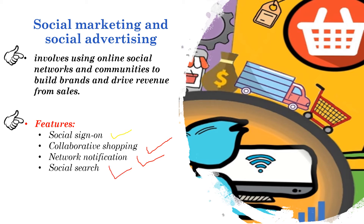We also have social search, enabling an environment where consumers can ask their friends for advice on purchases of products, services, and content. While Google can help you find things, social search can help you evaluate the quality of things using information from your friends and their friends.